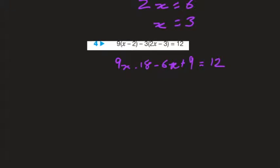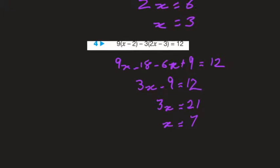Grouping like terms: 9x minus 6x is 3x, minus 18 plus 9 is minus 9, equal to 12. Therefore 3x is equal to 21, and so x is equal to 7, dividing both sides by 3.